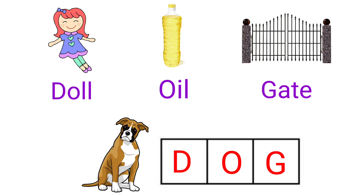Finally, we have to get the word dog: D, O, G — dog. I hope you all understand. Thank you.